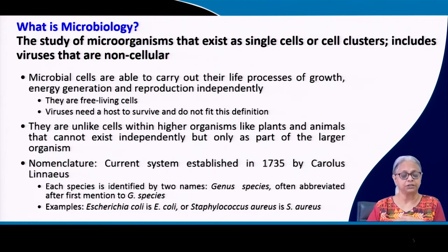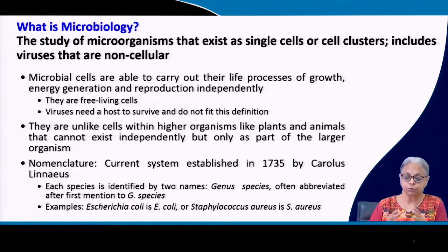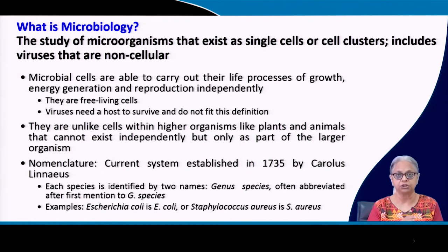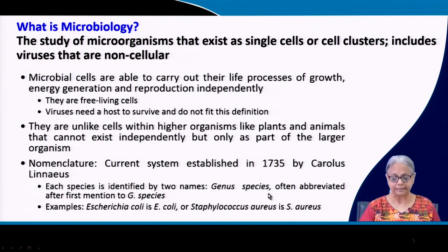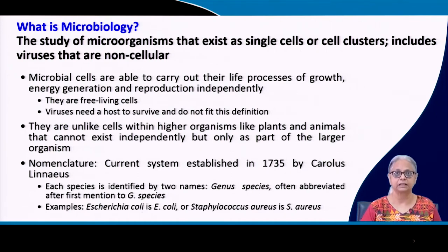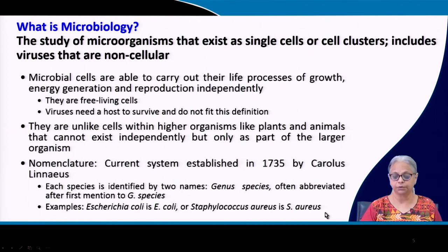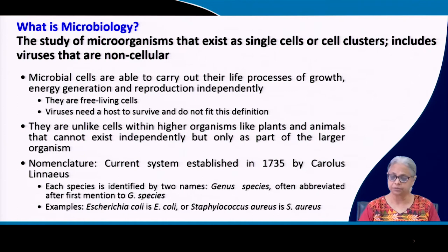The nomenclature for naming organisms was established in 1735 by Carolus Linnaeus and is based on two names: a genus and a species — like a first name and last name. The genus is written first, followed by the species. After the first full mention, we abbreviate to the initial of the genus followed by the species name. For example, Escherichia coli becomes E. coli, and Staphylococcus aureus becomes S. aureus.